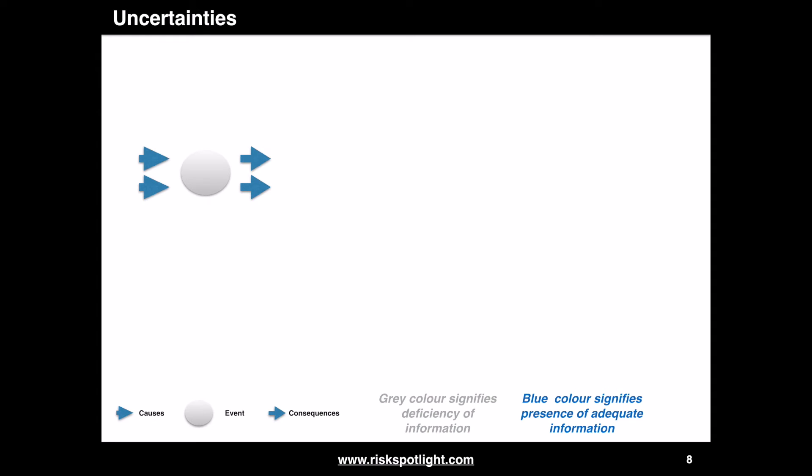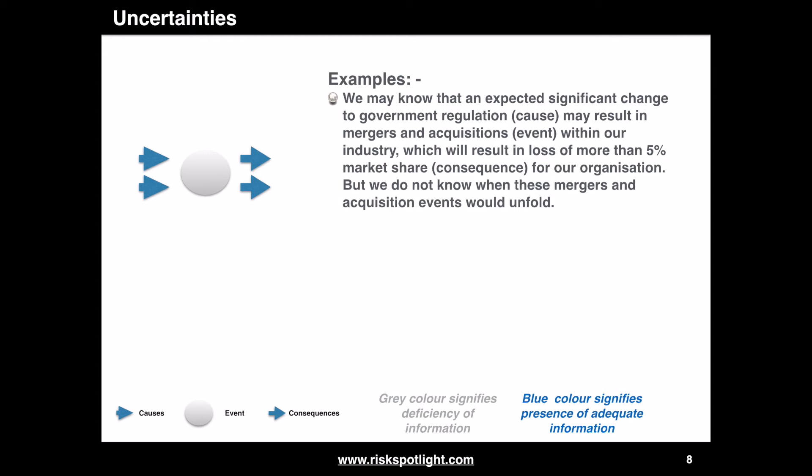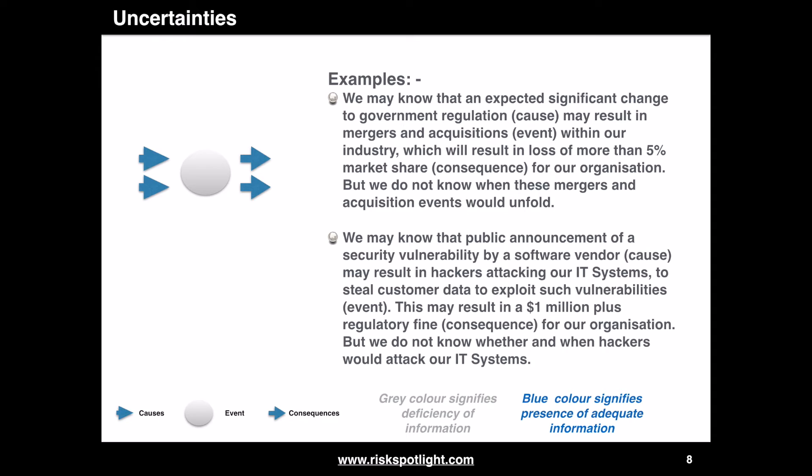The next variation covers situations where we do not have adequate information about causes and consequences, but we do have adequate information about events. For example, we may know that an expected significant change to government regulation may result in mergers and acquisitions within our industry, resulting in loss of more than 5% market share. Additionally, a public announcement of a security vulnerability by a software vendor may result in hackers attacking our IT systems to steal customer data, resulting in a 1 million dollar plus regulatory fine, but we do not know whether or when hackers would attack our IT systems.